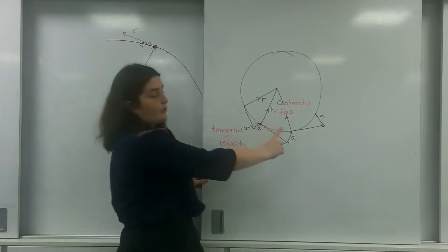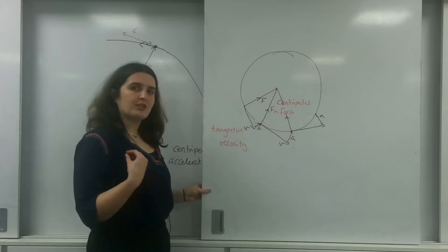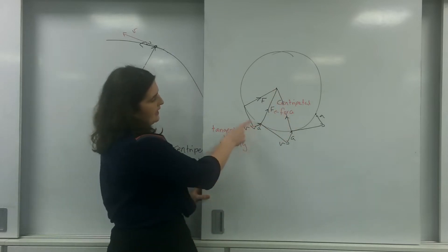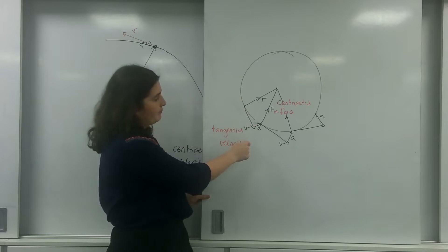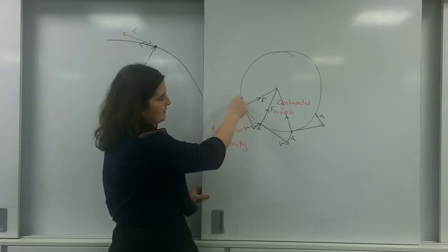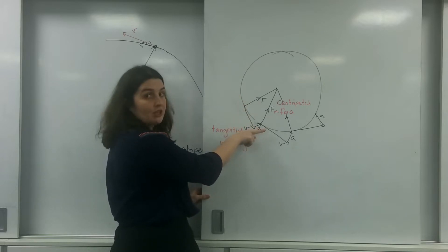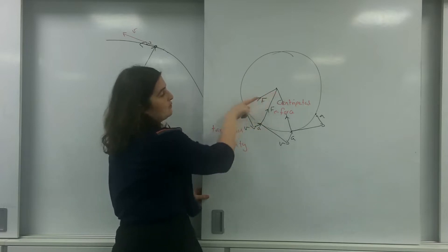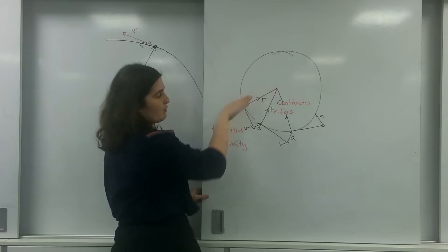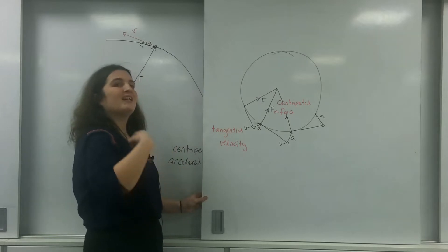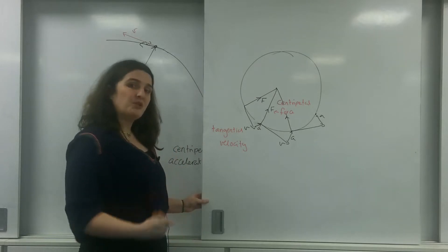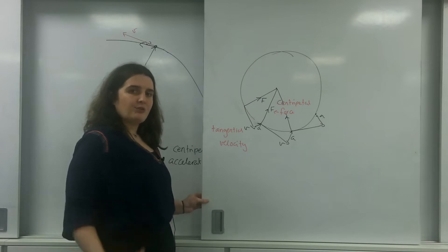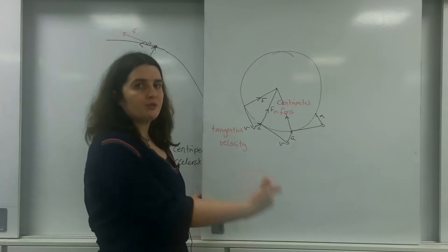That resultant force is a force acting towards the centre of the circle. As you can see here, this is my velocity vector and this is my acceleration — so I'm going to be accelerating inwards. This acceleration is parallel with the forces, in the same direction as the forces, and that is Newton's second law: I will accelerate in the direction of my resultant force.